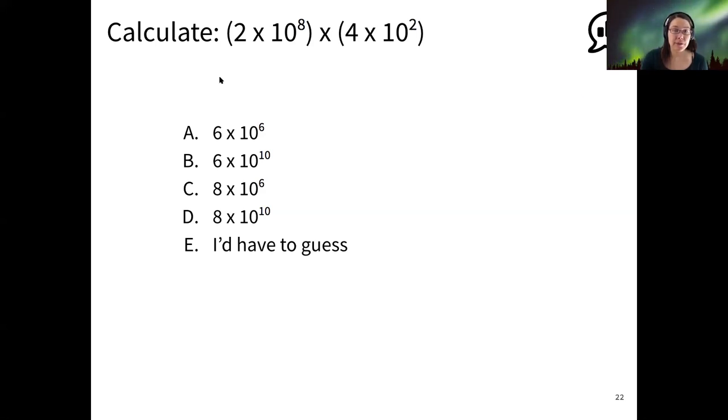So if I multiply my 2 times 4, I know I get 8. So my coefficient is 8 and then my exponent 8 plus 2 gives me 10. Alright, so there is the full math.